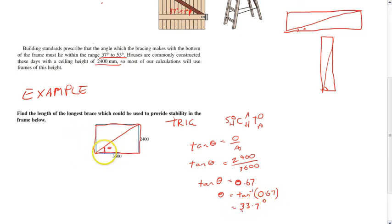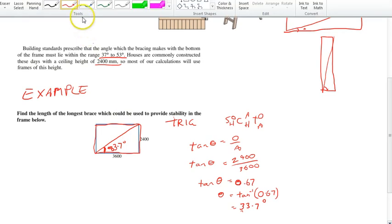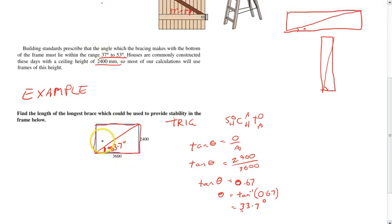This angle here is 33.7 degrees. Unfortunately, that's outside of building regulations. Our angle needs to be between 37 and 53. This angle is 33.7, so the only thing that we can do is bring our brace in a little bit. That'll make the angle slightly larger. We're going to bring it in as little as possible, which means we're going to bring it in to the minimum range, 37 degrees.